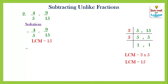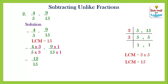Now we make both denominators equal to the LCM, fifteen. For the first fraction, we multiply the denominator five by three to get fifteen, and similarly multiply the numerator by three. Then we put the subtraction sign. The second denominator is already fifteen, so no change is needed — we can multiply by one. So fifteen times one is fifteen, and nine times one is nine.